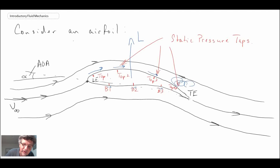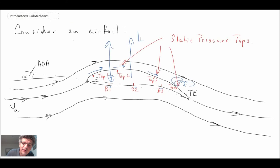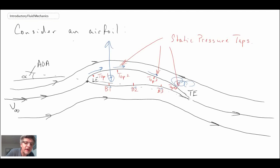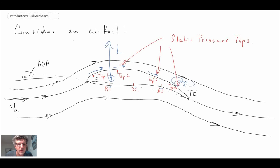Lift doesn't act in the middle — it usually acts at the quarter chord location. So that's an interpretation of Bernoulli's equation, along with a little experiment to show what the pressure distribution looks like on an airfoil.